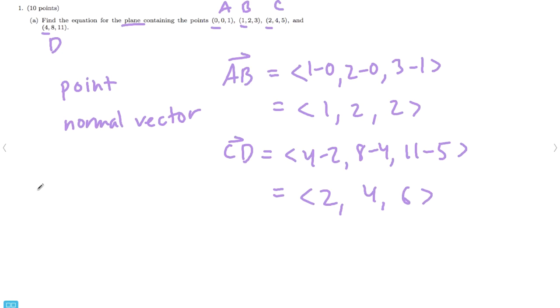Alright, now cross product. So, the way I do cross product is I set up a little matrix. i, j, and k. And then, it doesn't matter which one you put here, which vector you put here, which vector you put here.